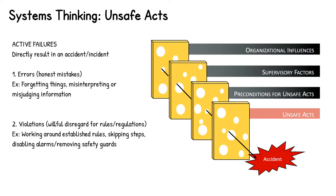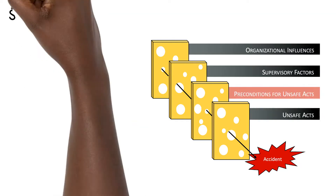Violations, on the other hand, are the willful disregard for the rules and regulations. Violations can involve working around established rules, skipping mandated steps, disabling alarms, or removing safety guards.